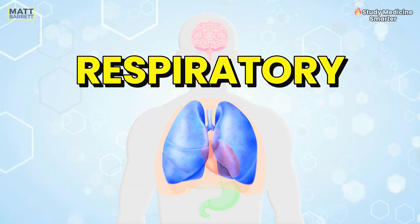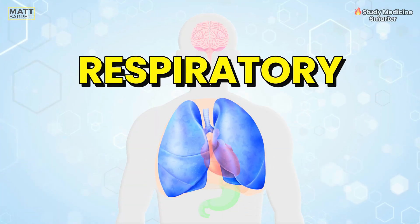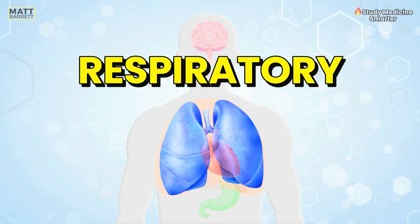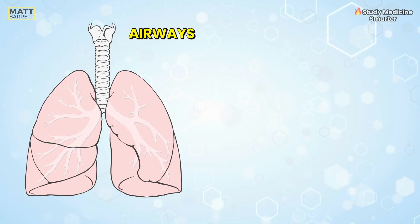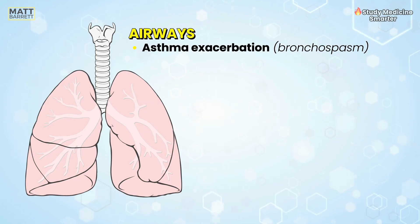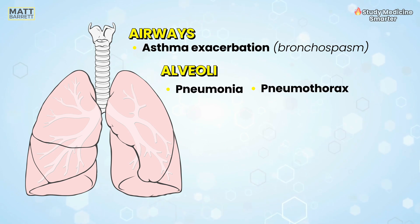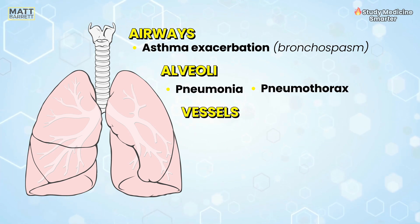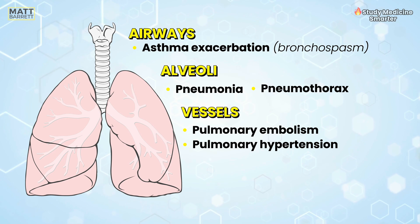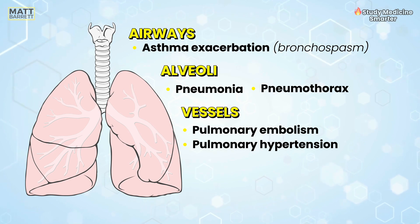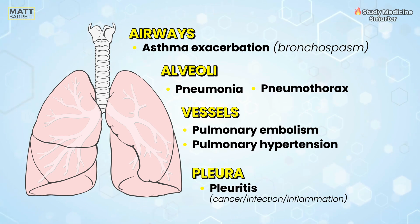Now respiratory causes — again, think broadly anatomically. Think of the larger airways such as chest tightness in asthma, down to the alveoli to remind you of pneumonias, pneumothorax, and don't forget the blood vessels to remind you of pulmonary embolism or the pain that you can feel in pulmonary hypertension.